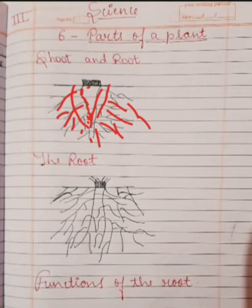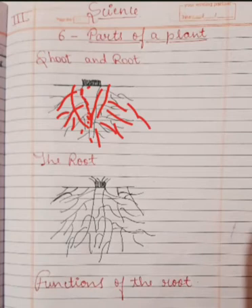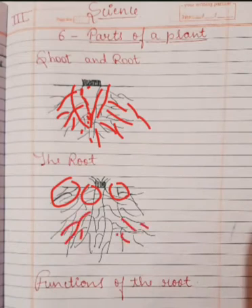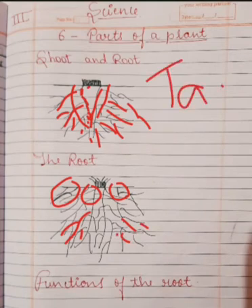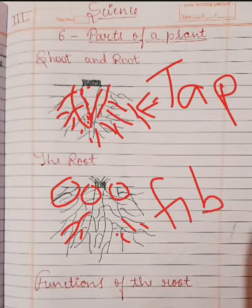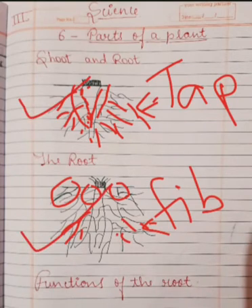If we talk about fibrous root — when a number of roots grow from the end of the stem, it is called a fibrous root. You can see in this diagram, all these roots grow together. So this is a taproot and this is a fibrous root.